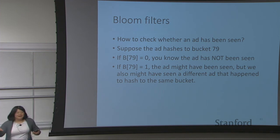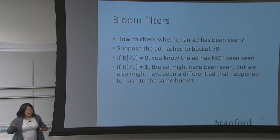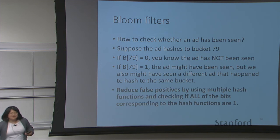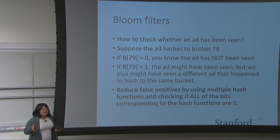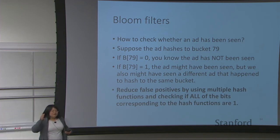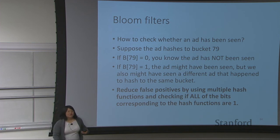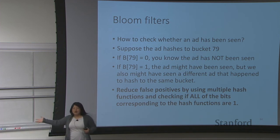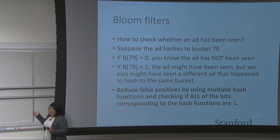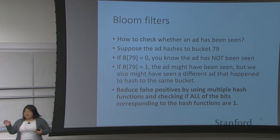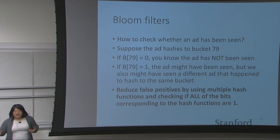This bloom filter idea has no false negatives, but could potentially have false positives. How do we deal with false positives? We use multiple hash functions and require that all of the bits corresponding to all of the hash functions are set to one. That is our way of reducing false positives while still maintaining no false negatives.